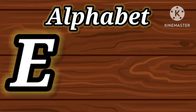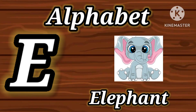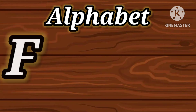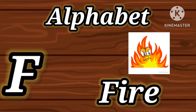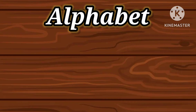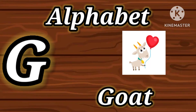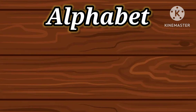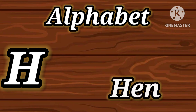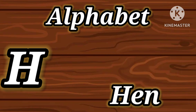E for Elephant. E-L-E-P-H-A-N-T, Elephant. F for Fire. F-I-R-E, Fire. G for Goat. G-O-A-T, Goat. H for Hen. H-E-N, Hen.